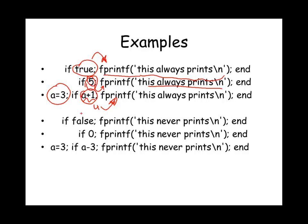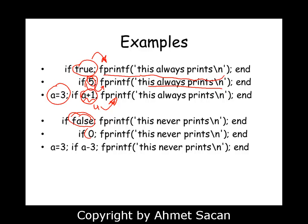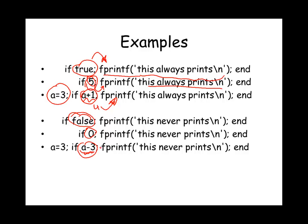In the next three examples, the if condition evaluates to false, and that can either be a logical false, a number 0, or any complex expression that evaluates down to the number 0. In all of these cases, since the if condition is false, we will skip the body of the if statement as if it never existed, moving on past this if statement.